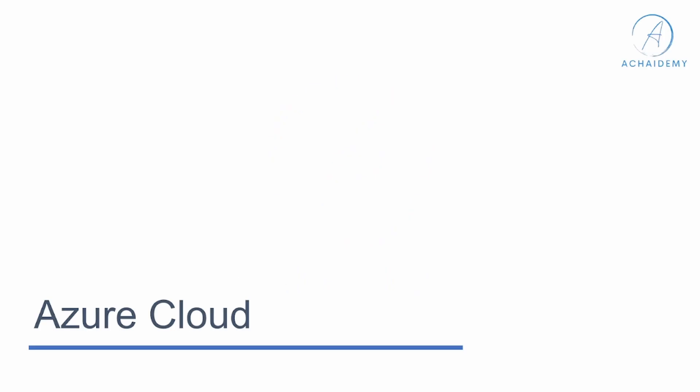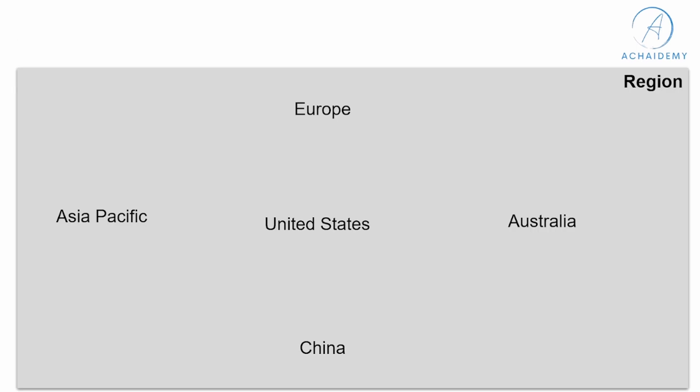Before getting started with Azure cloud, the first thing we need to understand is the physical infrastructure of Azure and how Microsoft manages the Azure infrastructure across the geography. We will begin with understanding how Azure defines the locations and how they are grouped, so that we get a good understanding when we get into the application services and decide how to use them.